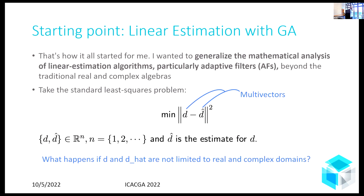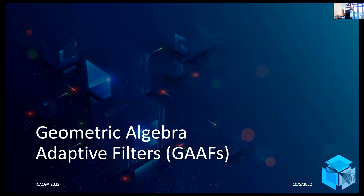In signal processing, people are completely comfortable with complex numbers and quaternions — that's not a problem. The problem is that when they move from real to complex to quaternions, it's as if they are doing different things. They don't make the theoretical connections between them, which creates a lot of friction when developing tools to implement this in the real world. Geometric algebra can unify all of this using the same geometric calculus for any kind of algebra. So I decided to generalize the theory of adaptive filtering for geometric algebra.